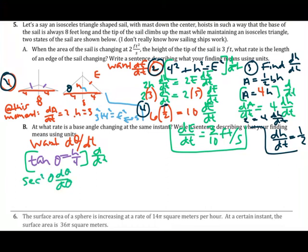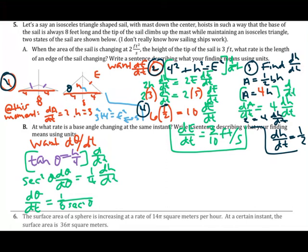Differentiating both sides with respect to t: sec²(θ) dθ/dt equals (1/4) dH/dt. From part A, dH/dt equals 1/2. Dividing both sides by sec²(θ) and multiplying 1/4 by 1/2 gives dθ/dt equals 1/8 times cos²(θ). Using right triangle trig, cosine of θ equals adjacent over hypotenuse equals 4/5 at this moment.